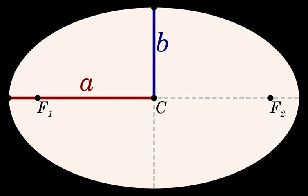The specific angular momentum h of a small body orbiting a central body in a circular or elliptical orbit is h = √(a·μ·(1 − e²)), where a and μ are as defined above and e is the eccentricity of the orbit.